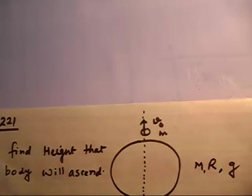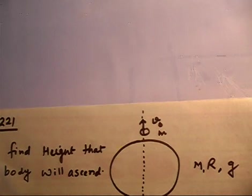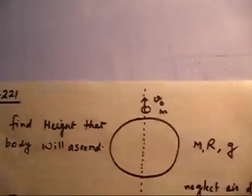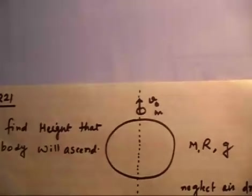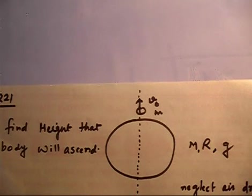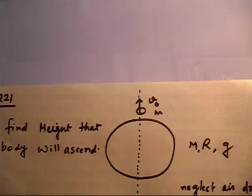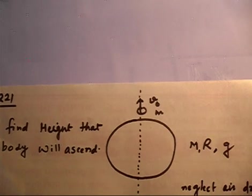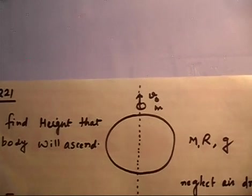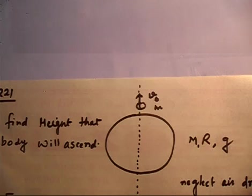The question asks: if you throw an object with velocity v0, what maximum height will it attain? Have you understood the question? Here is a hint — apply energy conservation: the total energy at the surface equals the total energy at height h. Take two minutes, pause, do a rough estimate, and then we will discuss the solution.